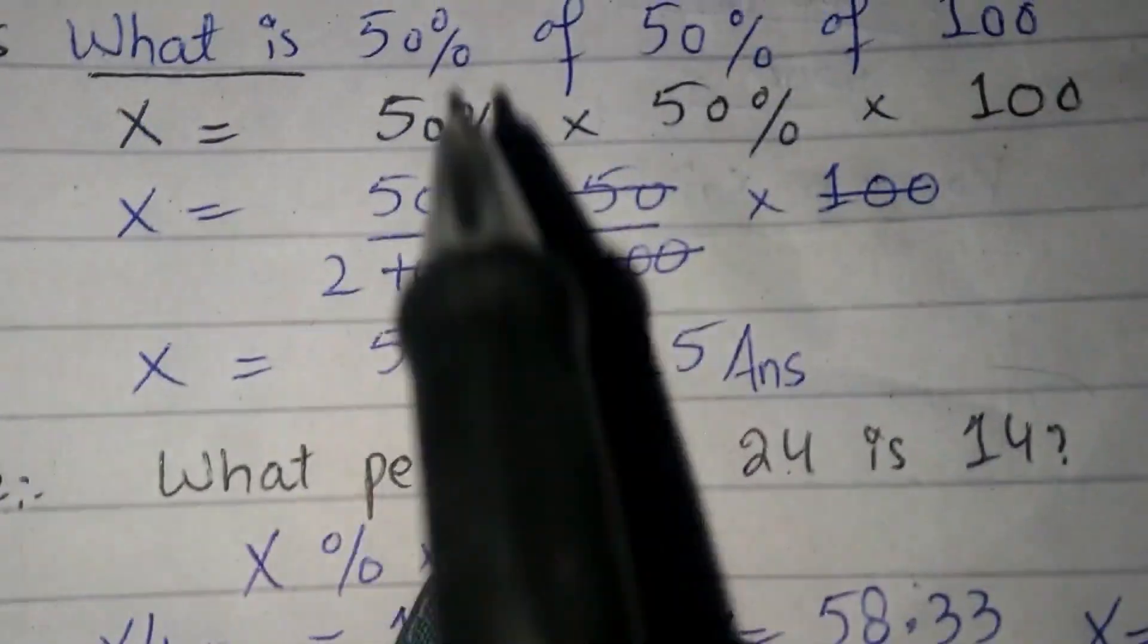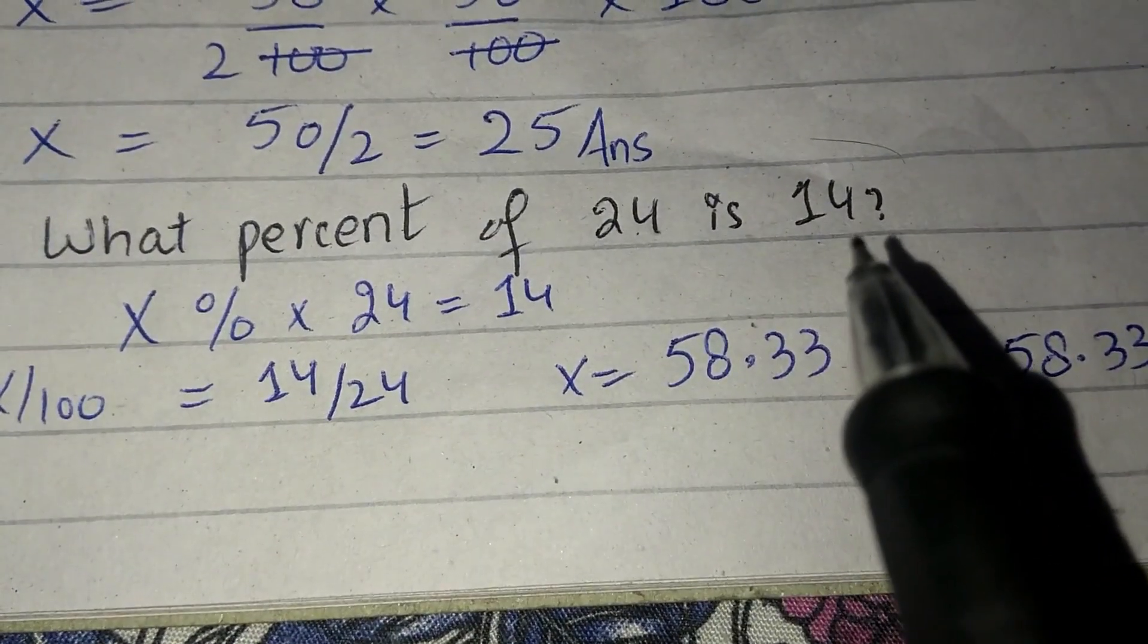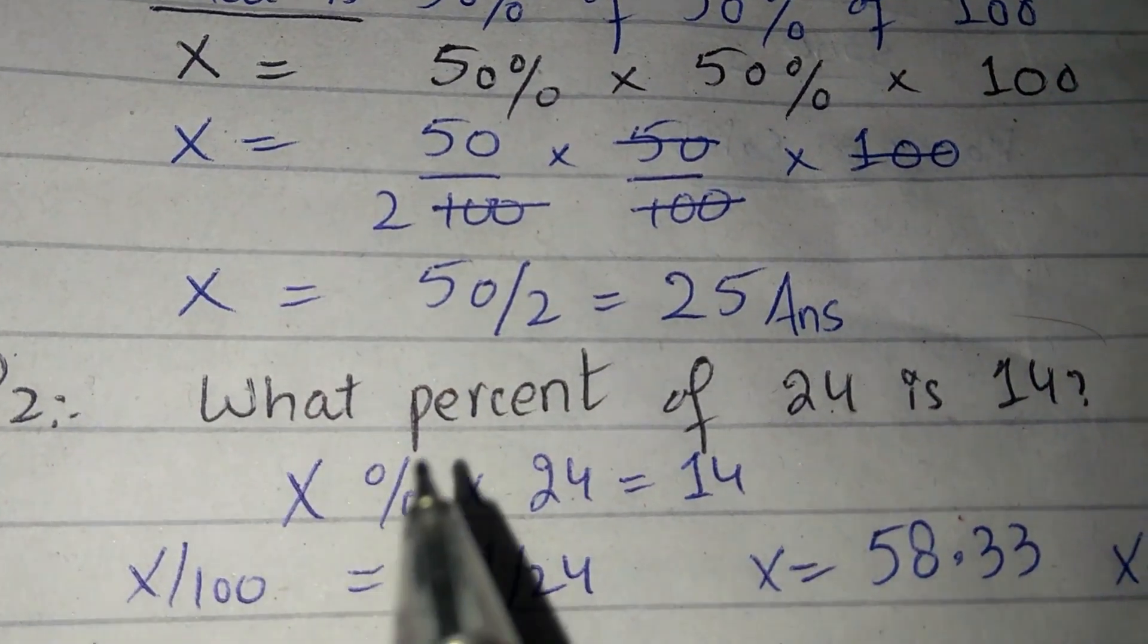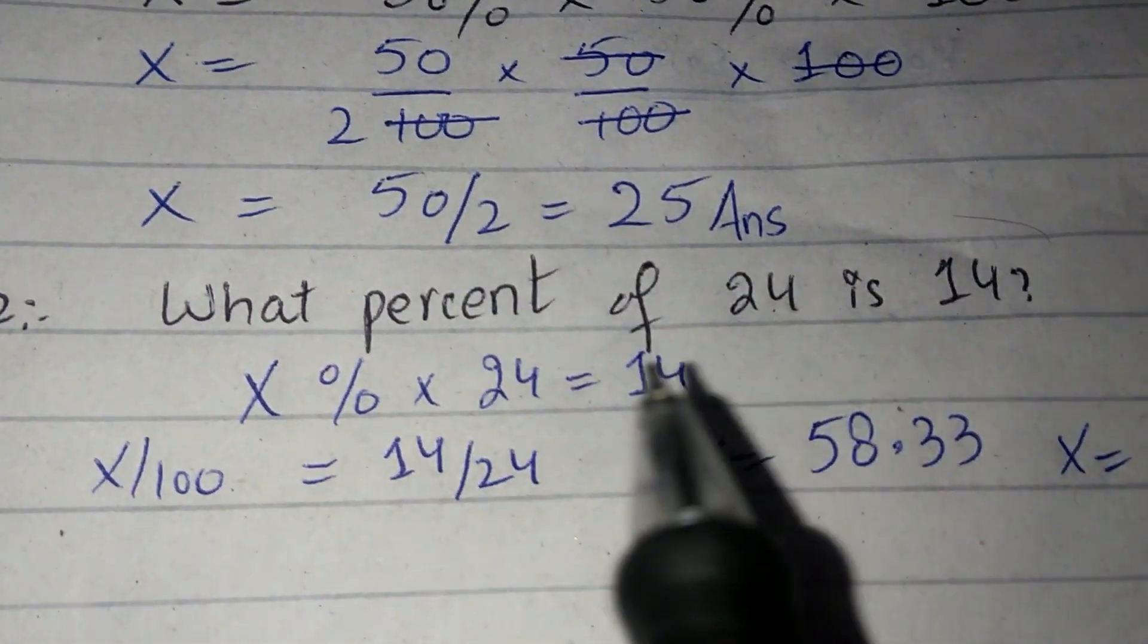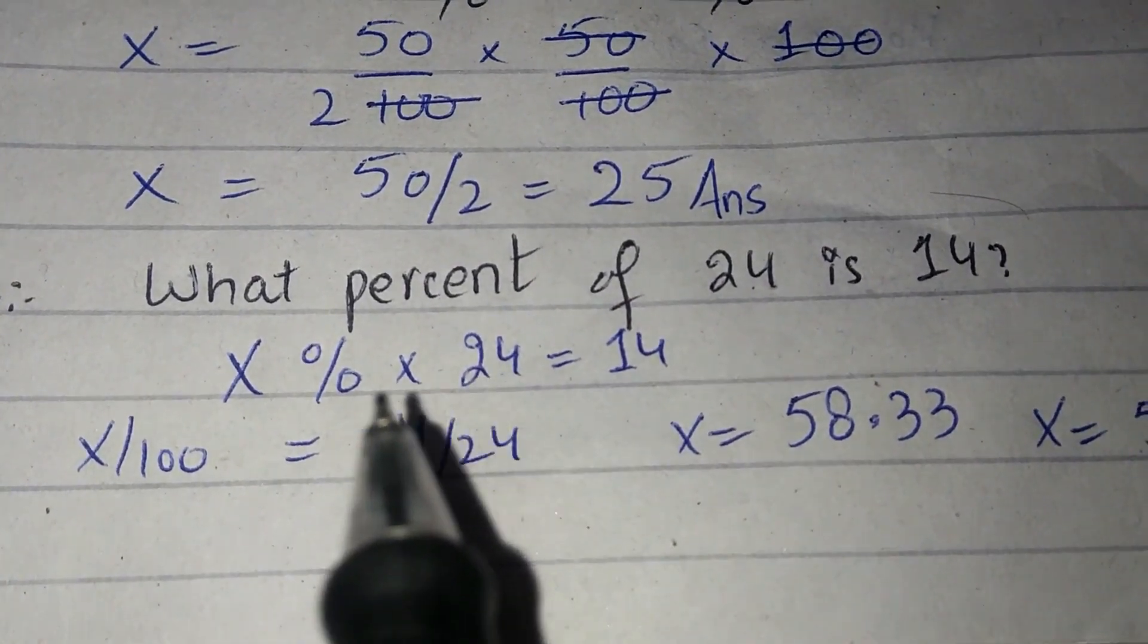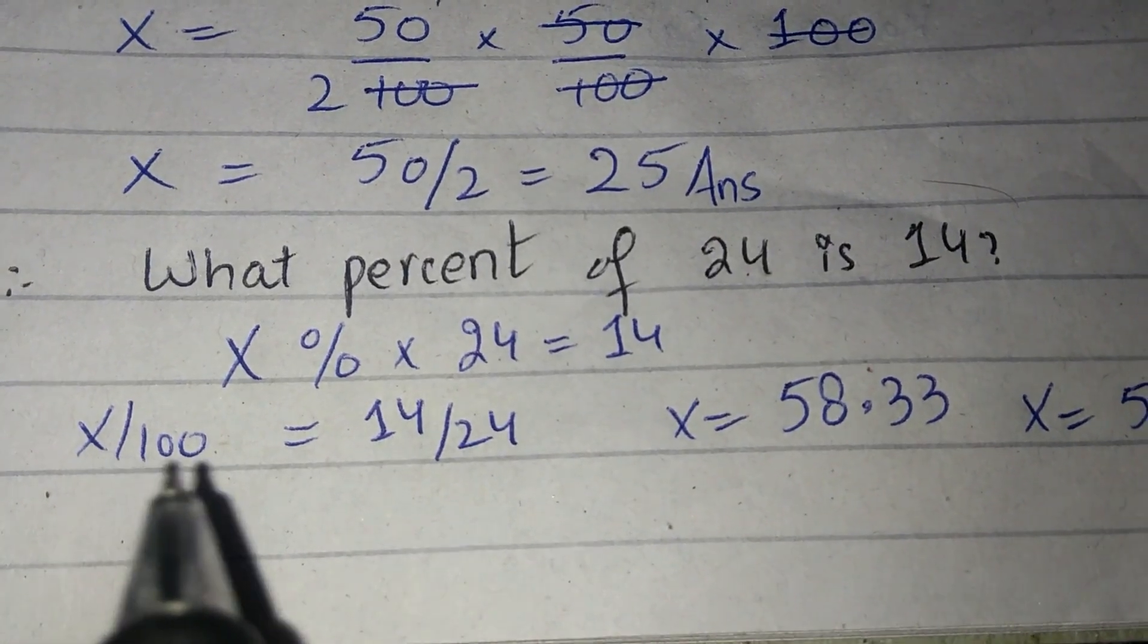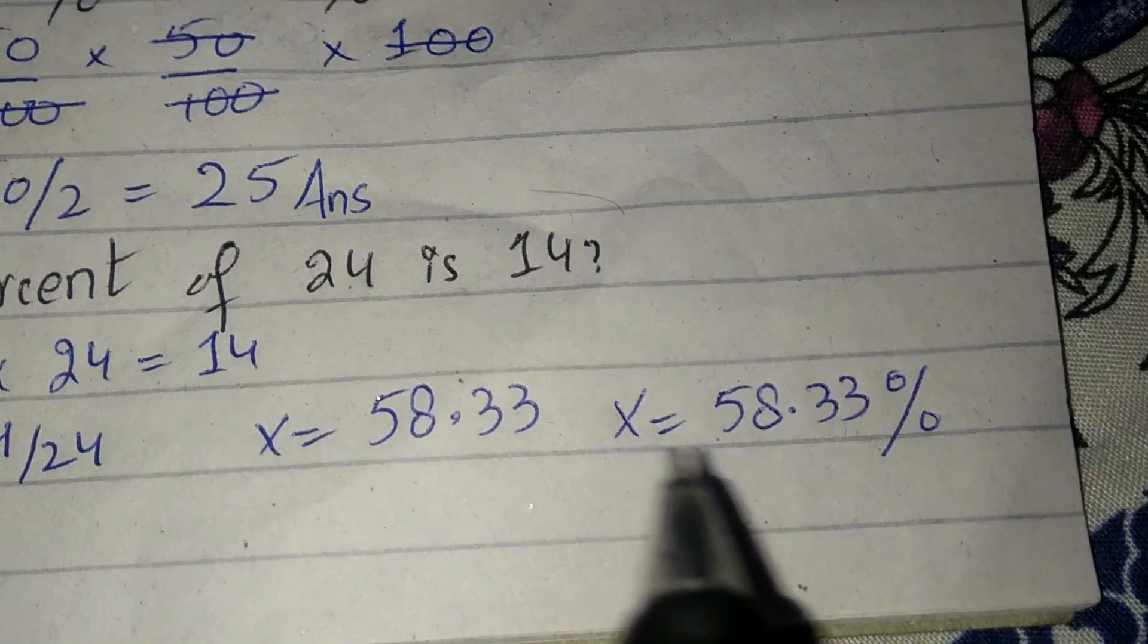Next question, what percent of 24 is 14? What means x percent, of means multiplication, is means equal. x percent into 24 equals 14. Solve kiya, 58.33 percent answer aa gaya. Simple.